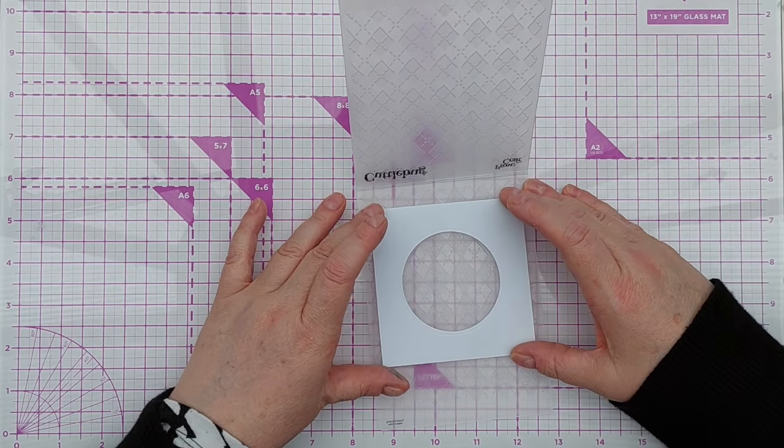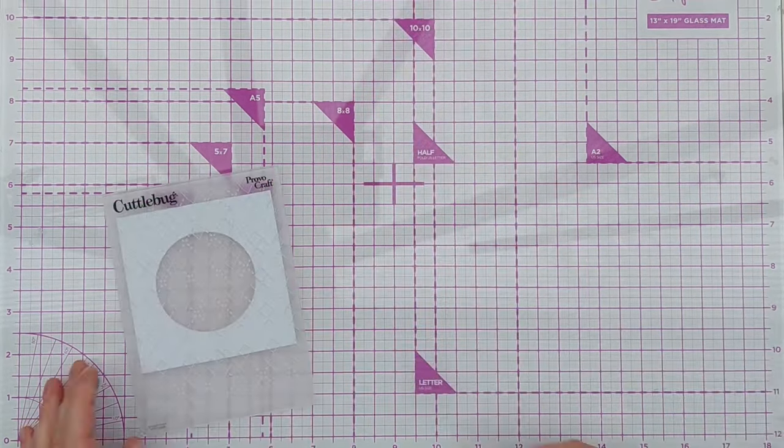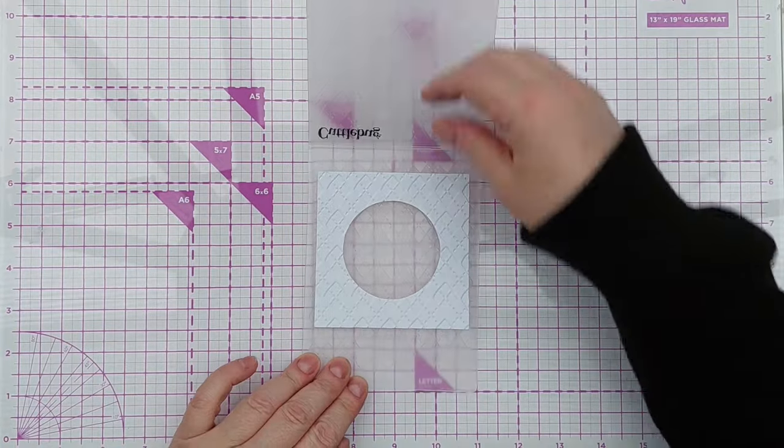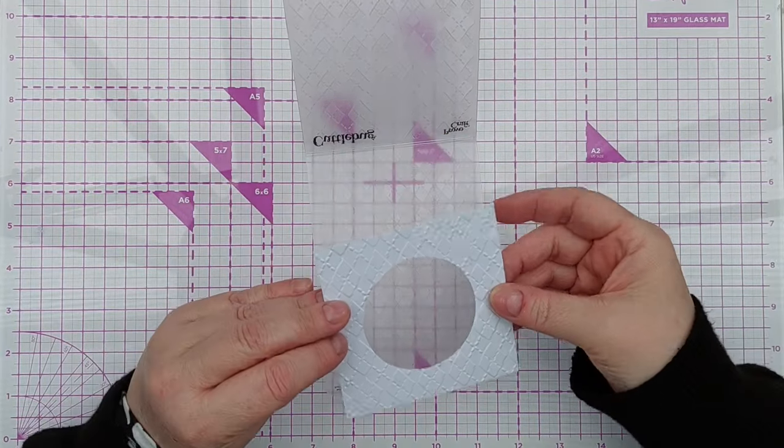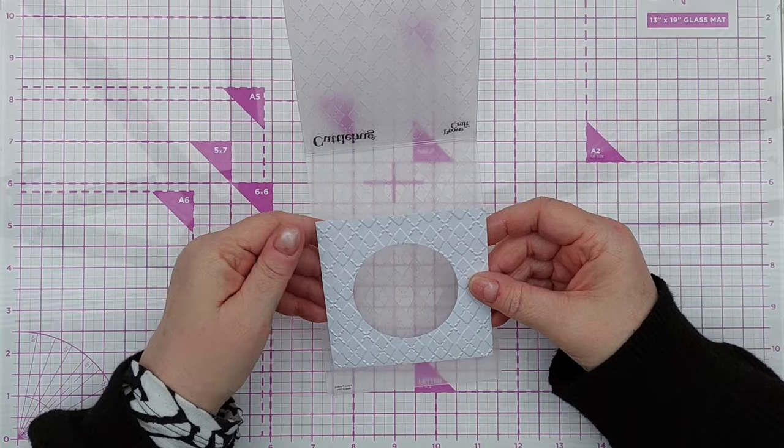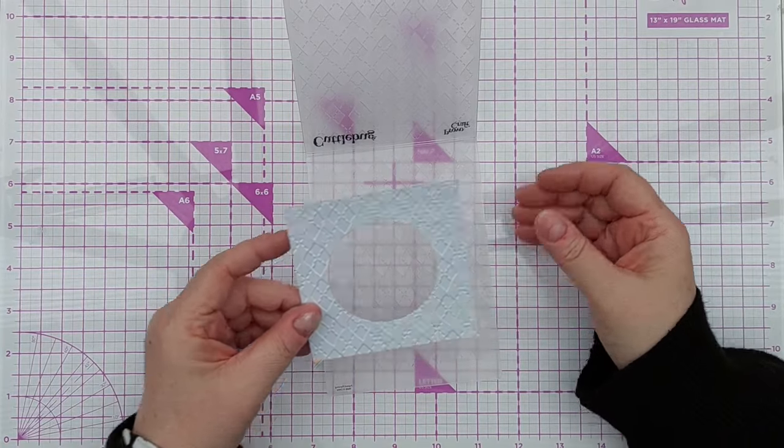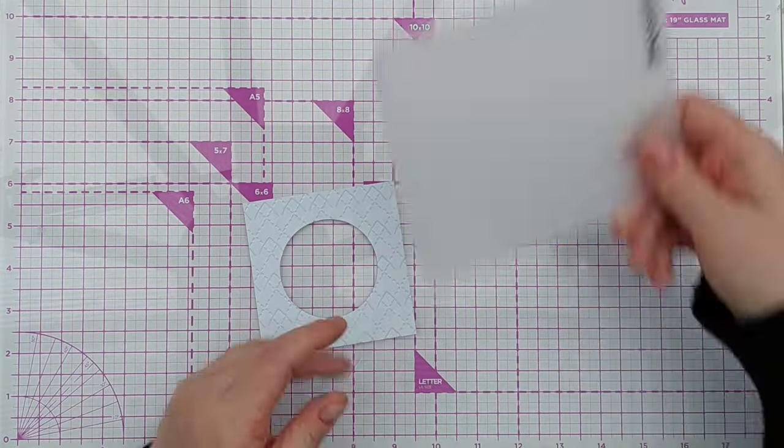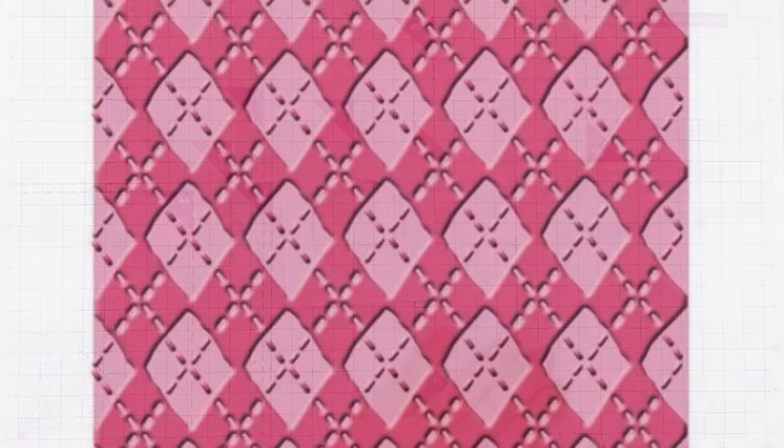It's usually best to die cut from your panel first and then use an embossing folder to add texture. If you emboss and then die cut you run the risk of flattening your embossing. I chose the argyle pattern for its regular repeating pattern which I thought would give the panel texture but not distract from the focal point.